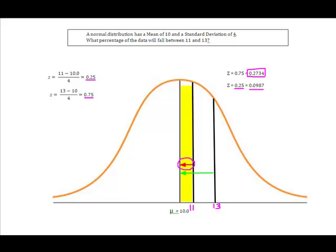Well, look what's happened. The area that's highlighted in yellow, I've double dipped, because it was included in this 27.34, wasn't it? Because that Z value for 13 went all the way from 13 to the mean. This Z value of 0.25, the 0.0987, goes from my value of 11 all the way to the mean.